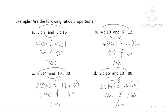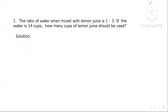Now let's see if we can apply this to real-life situations, as I'll illustrate in the next example. Problem 1: The ratio of water when mixed with lemon juice is 1 to 3. If the water is 14 cups, how many cups of lemon juice should be used? You are given the ratio of 1 to 3.